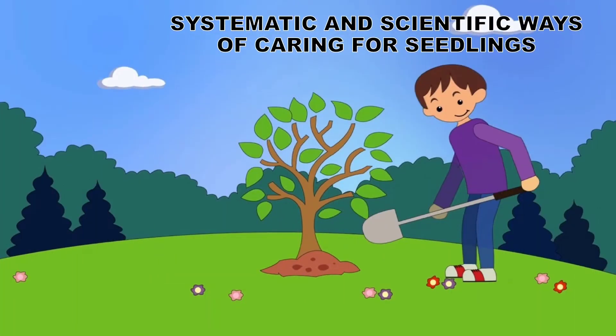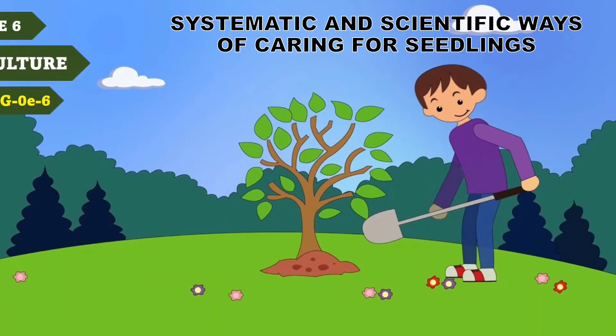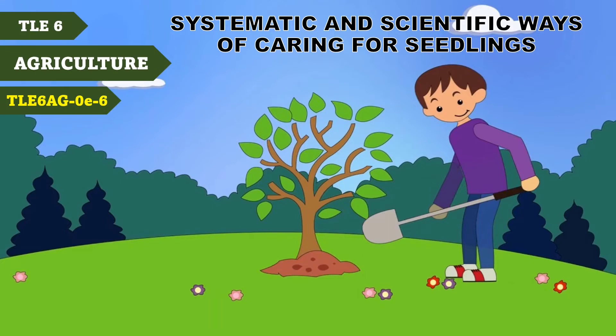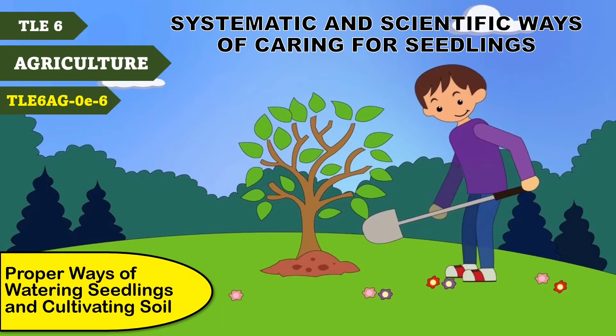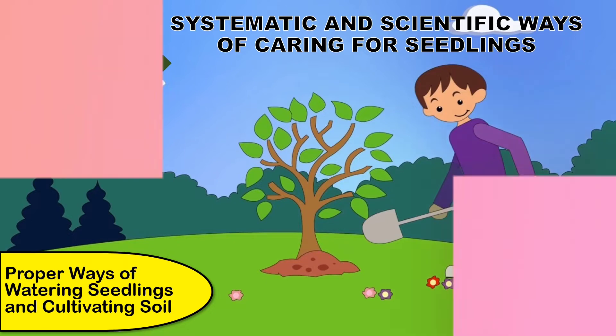Systematic and scientific ways of caring for seedlings. Today we are going to talk about this component of agriculture and focus on proper ways of watering seedlings and cultivating soil.